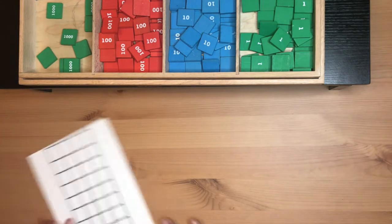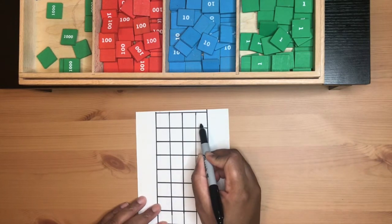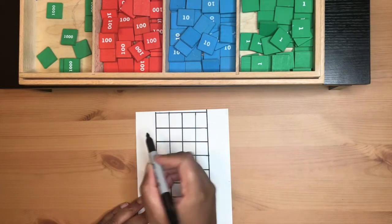I'm going to get my piece of paper and I'm using a marker just so that you can see the numbers clearer. We're going to start with the units, the unit, ten, hundred, thousand.